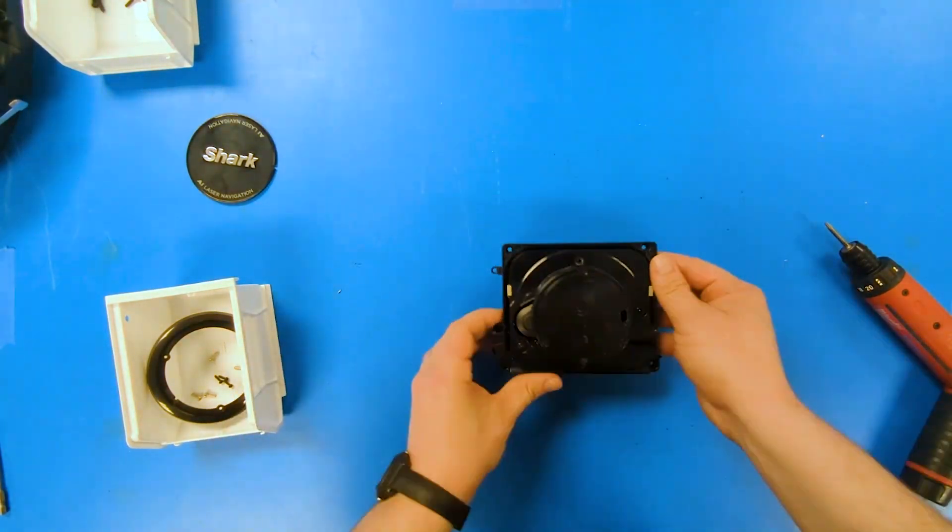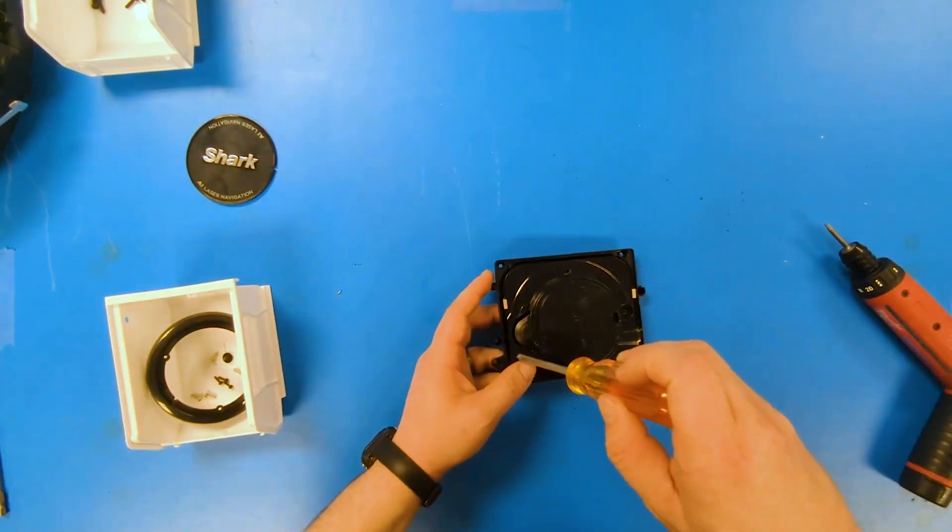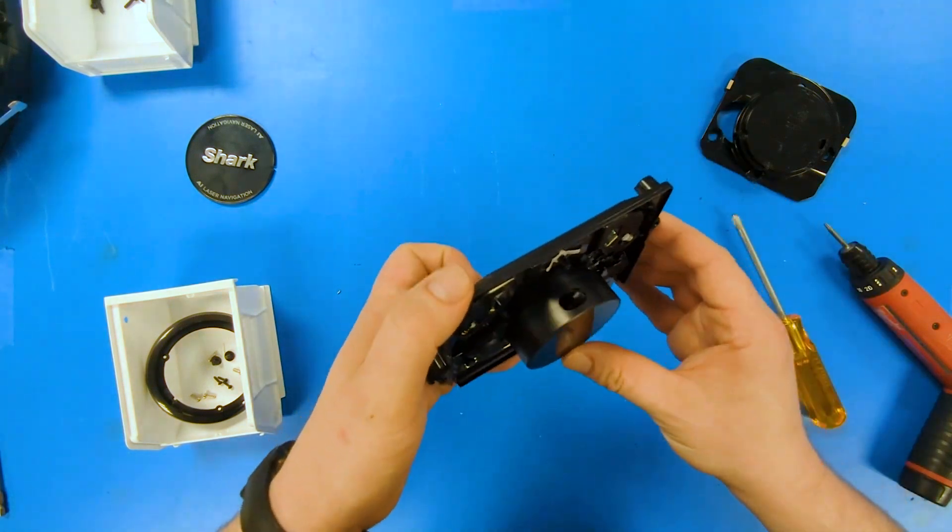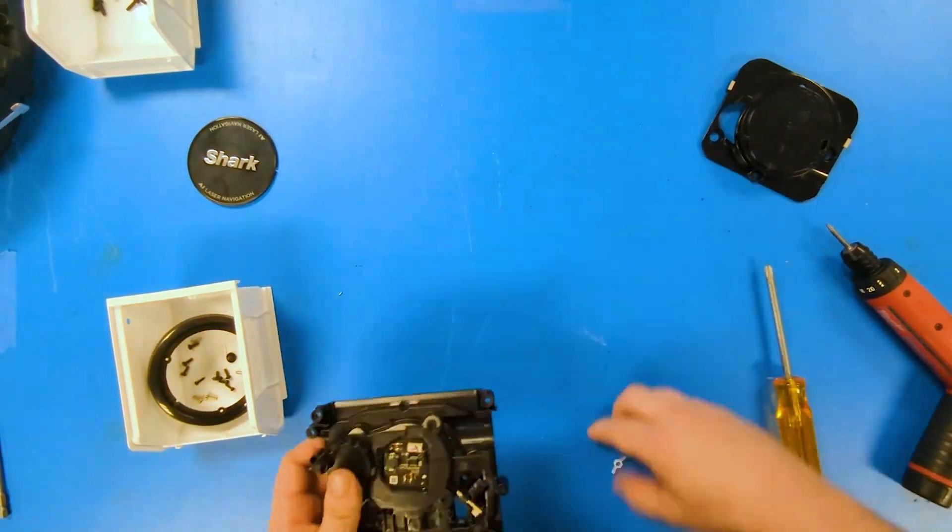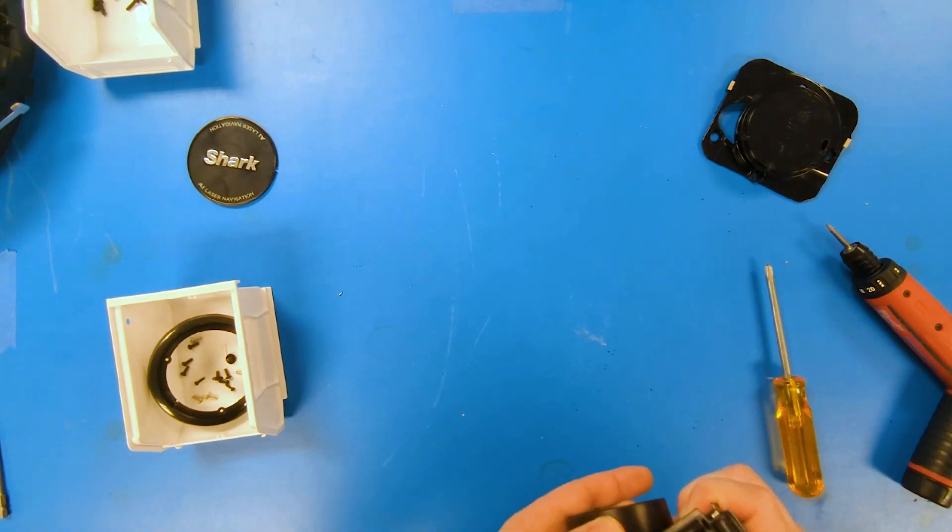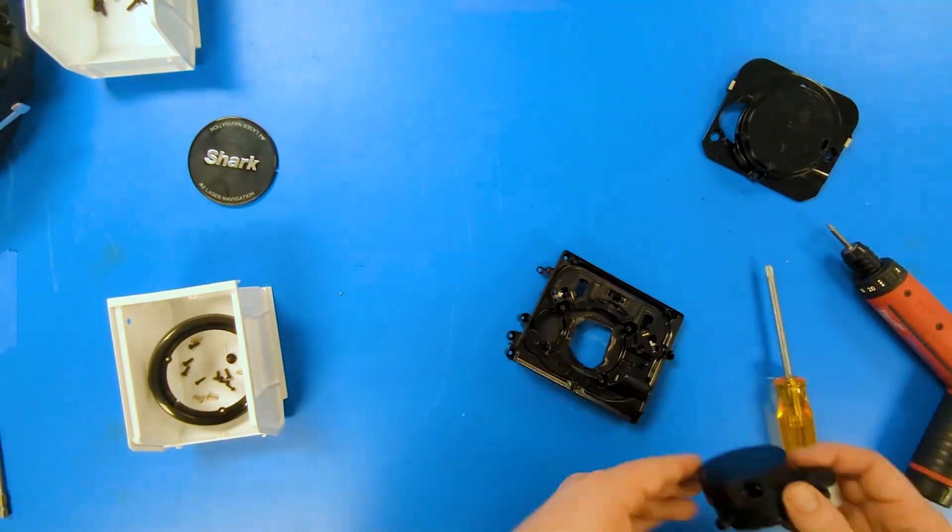Inside this lidar assembly is a motor which spins the laser transmitter and receiver. It is sealed in place with a foam adhesive to dampen vibrations and also keep a seal to keep any dust away from the lidar.